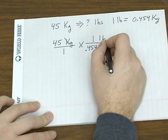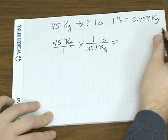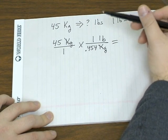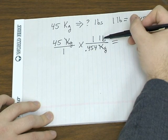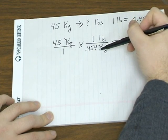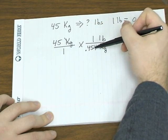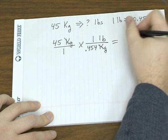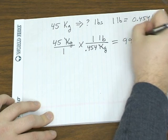The kilogram unit drops out. We're left with the unit we want. And as far as multiplying and dividing goes, if it's on top of the fraction bar, you multiply. When it's on the bottom, you divide. So we're taking 45, dividing it by 0.454. And that gives us 99.1 pounds.